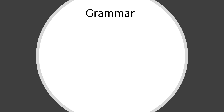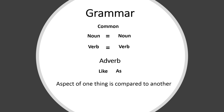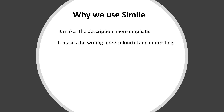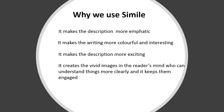Now let's talk about simile from the grammar point of view. A simile compares two completely different things that must bear something in common — a quality or characteristic shared between both. It may compare a noun to another noun or a verb to another verb, and this comparison is achieved through adverbs like 'like' and 'as.' We use simile because it makes descriptions more emphatic, writing more colorful and interesting, and descriptions more exciting. It also creates vivid images in the reader's mind, helping them understand more clearly and keeping them engaged.